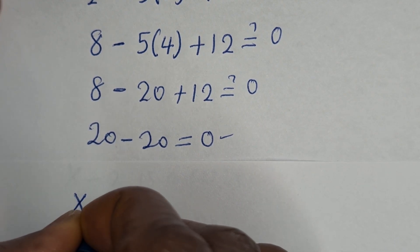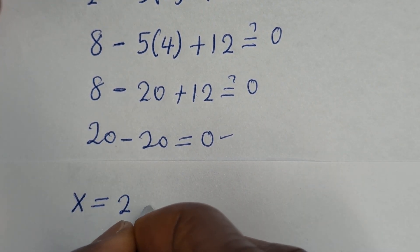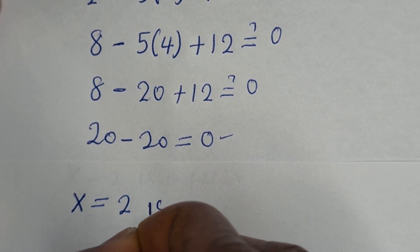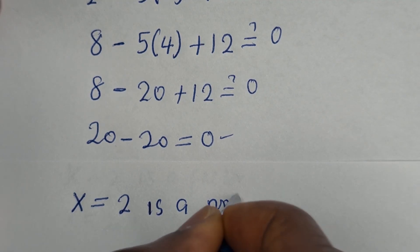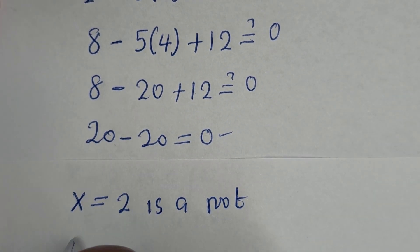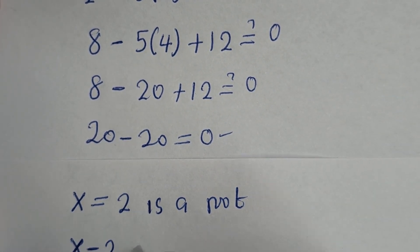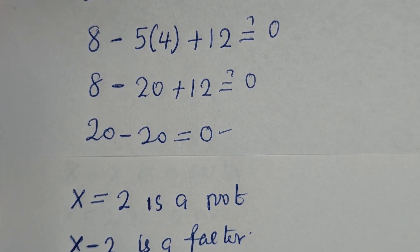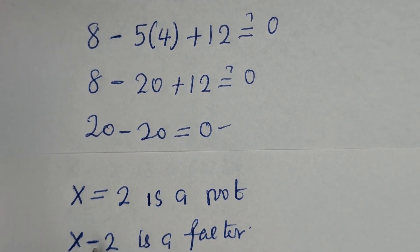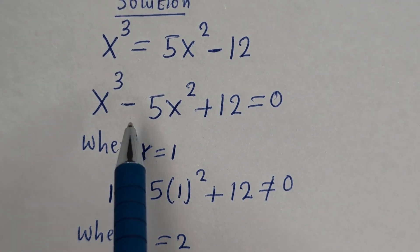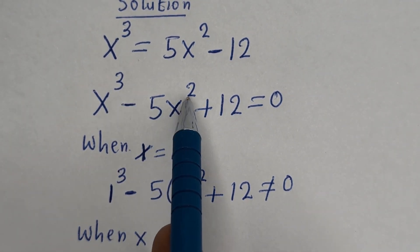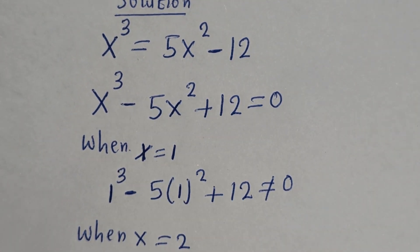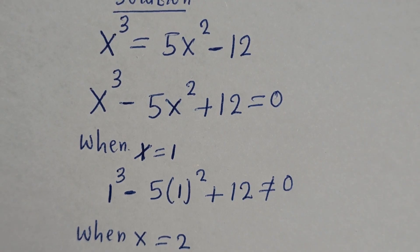Then s equals 2 is one of the roots of this equation, and s minus 2 is a factor. Now let us divide the given equation by s minus 2 to get the other roots. That is, we divide s raised to power 3 minus 5s squared plus 12 by s minus 2.